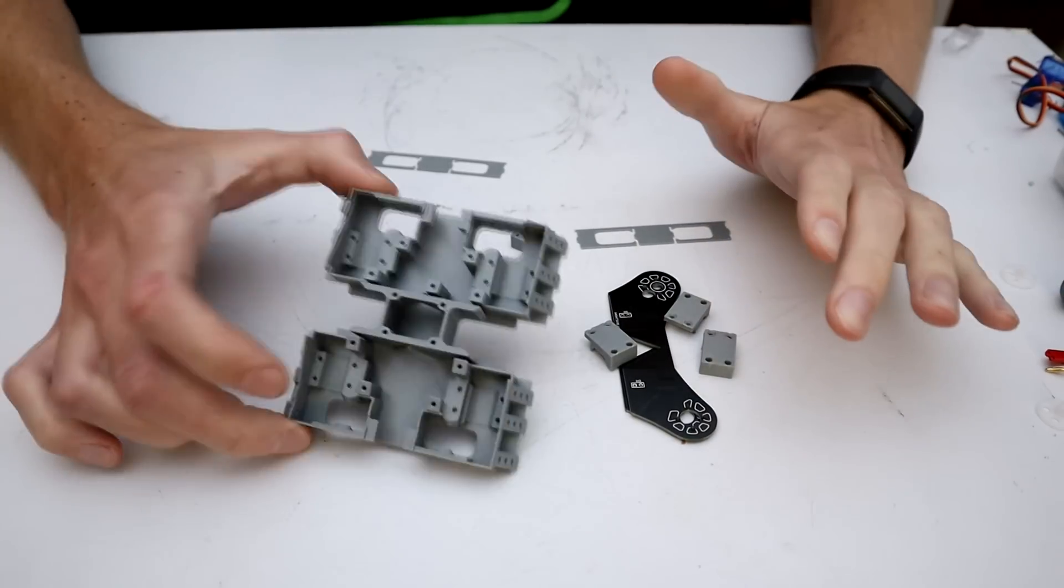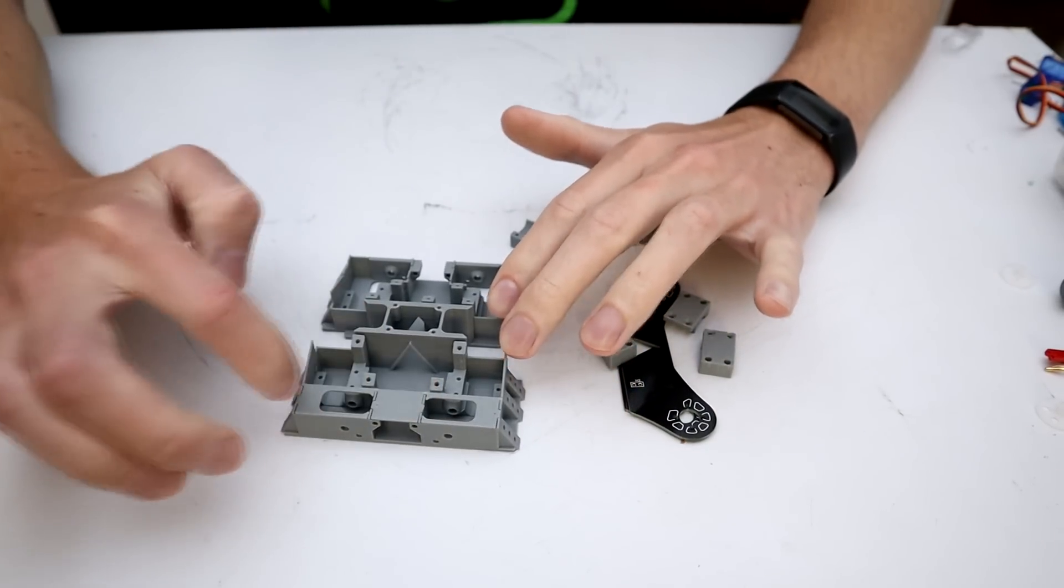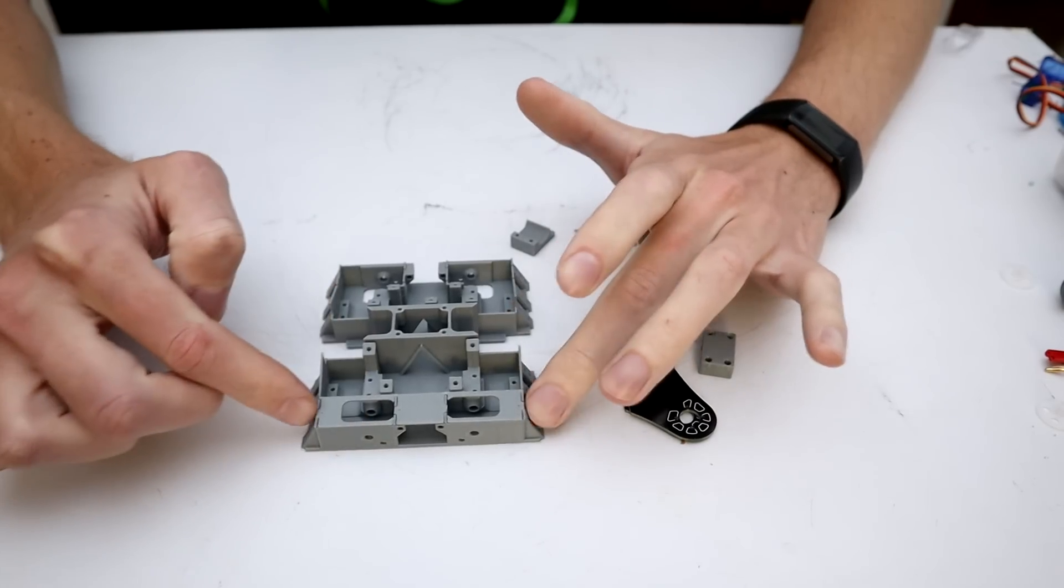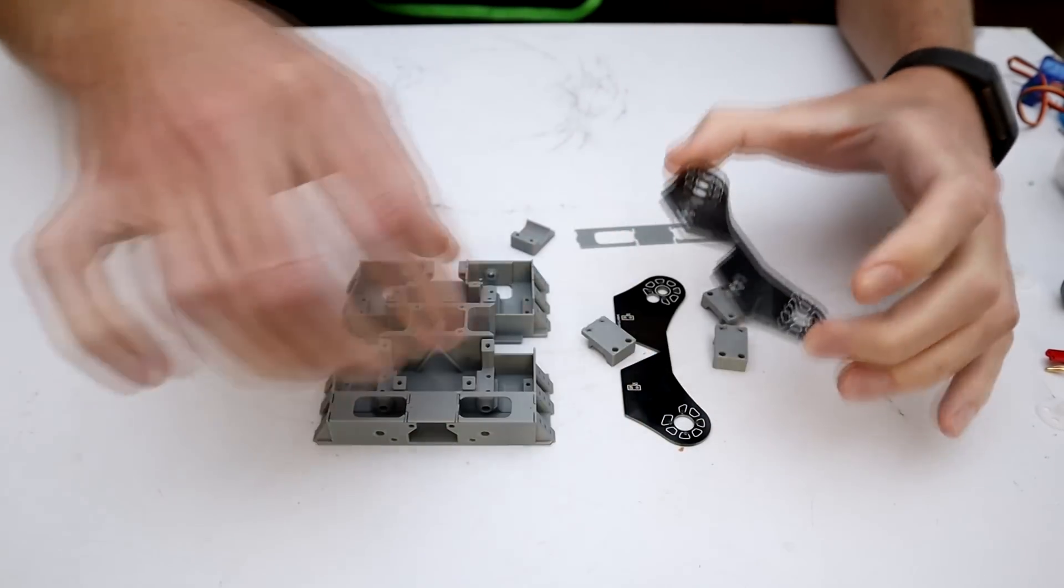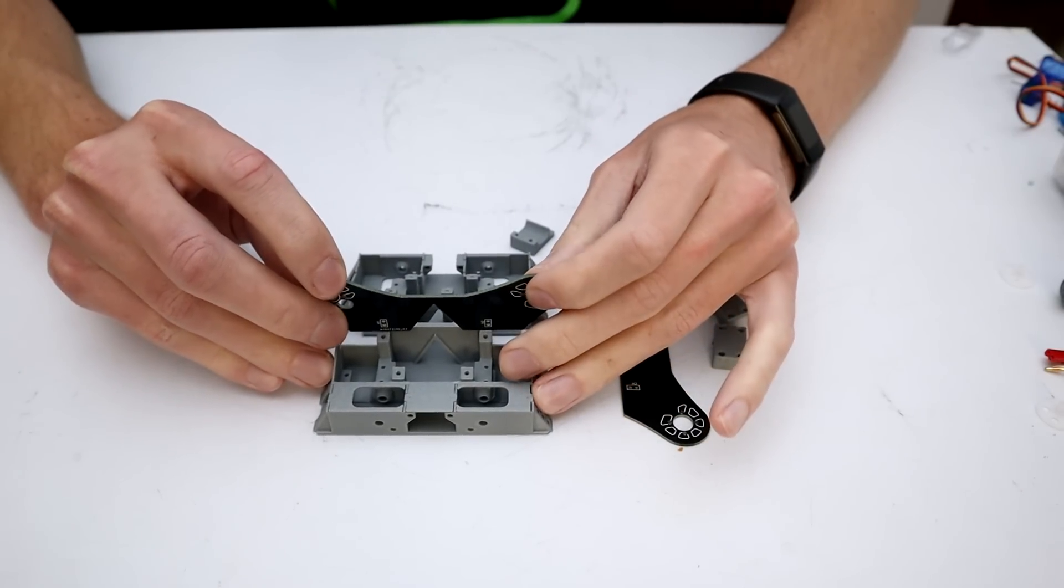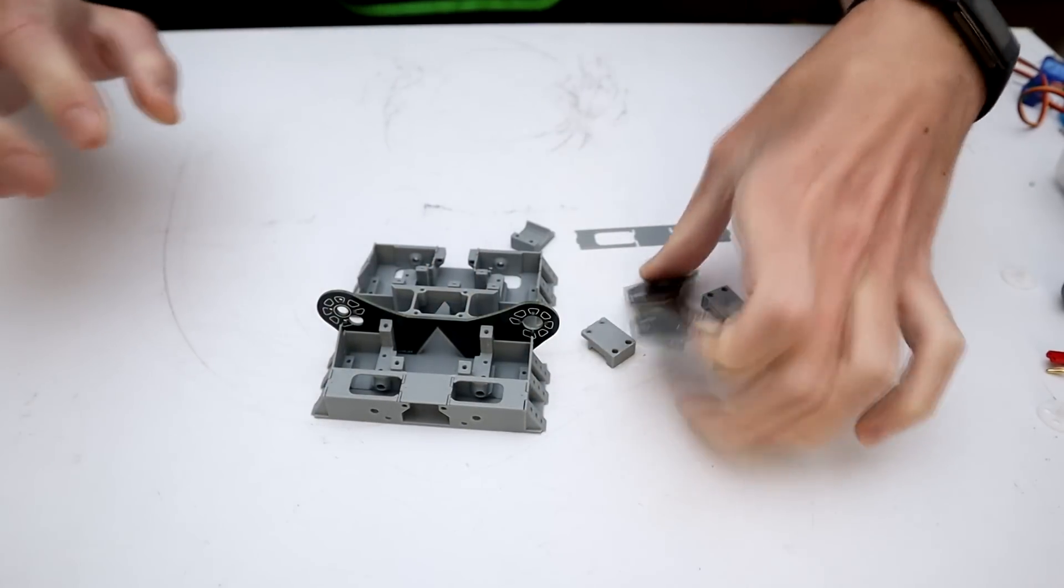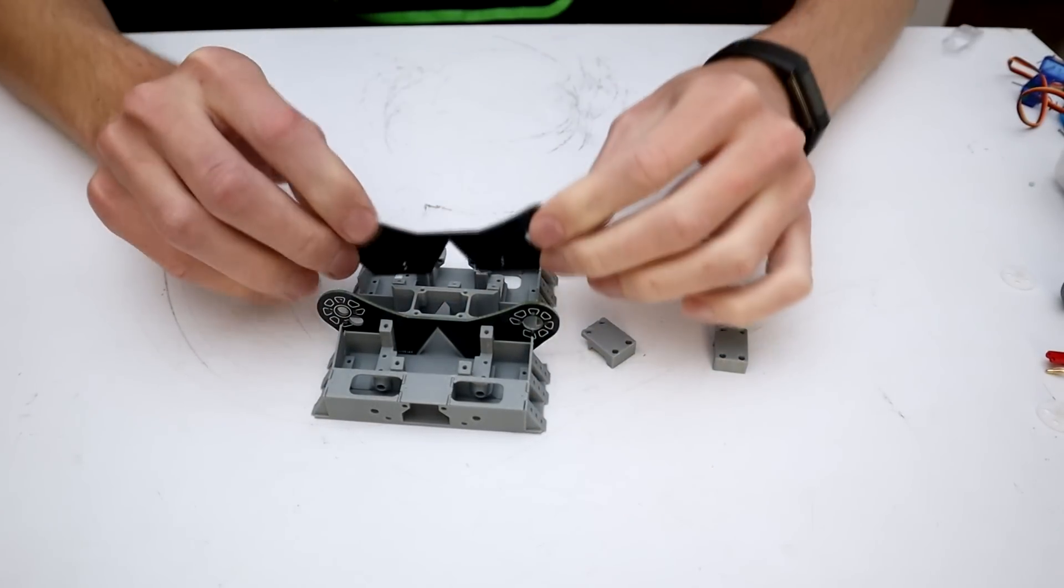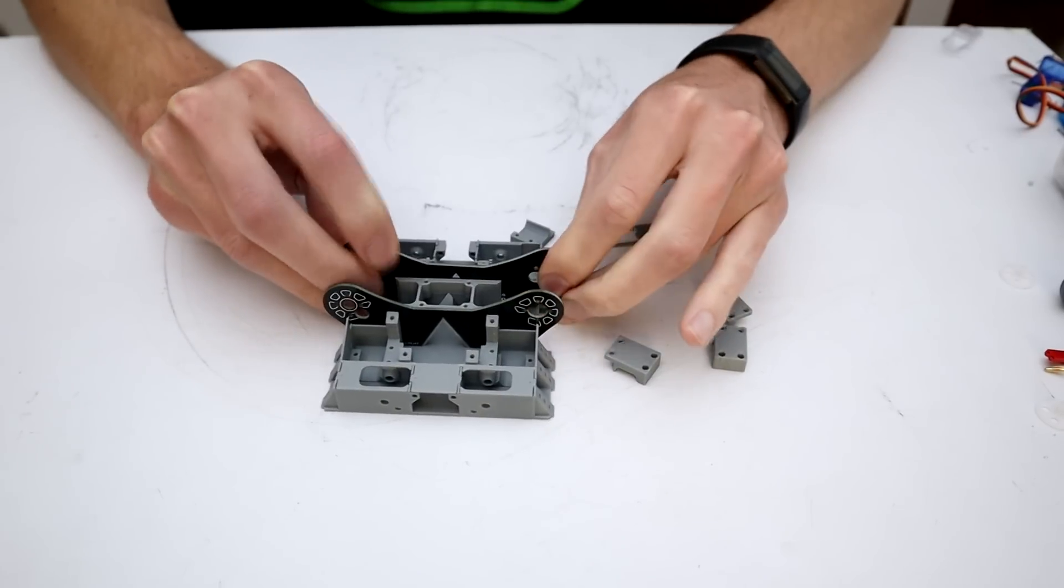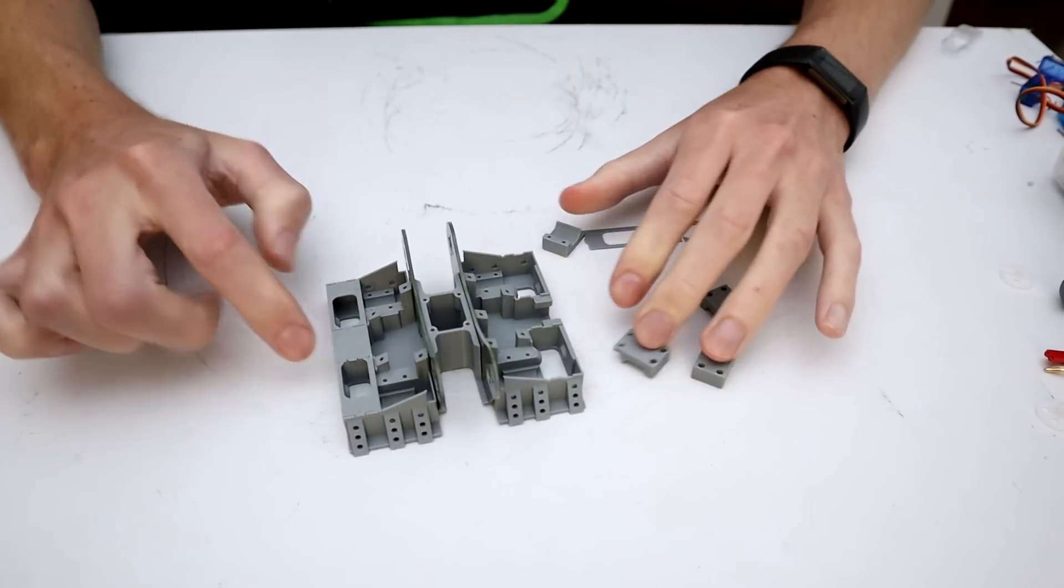And here is the chassis. This thing has been printed with some little extra bits to be glued on because printing those flat would have meant so much support material to remove. And we can just acetone weld these in place. They also have some sections where these PCBs that hold our motors in just slot into. And then there's some geometry in there to make sure that these line up exactly as we want them to. They're a slightly tight fit, but that honestly is actually really good.